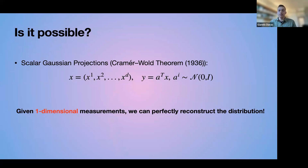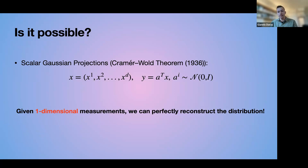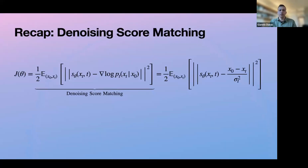Something shocking: consider a distribution in d dimensions, and all you observe are samples that are inner products between your samples and Gaussian vectors — one-dimensional projections. Due to Cramér-Wold theorem, it is actually possible, given these one-dimensional measurements, to perfectly reconstruct the distribution no matter how complicated it is. Of course, reconstructing an individual sample from a scalar is essentially impossible without a strong prior — but the distribution itself can be reconstructed given infinite one-dimensional Gaussian measurements.